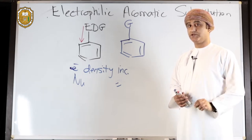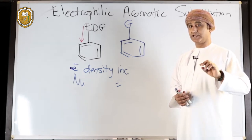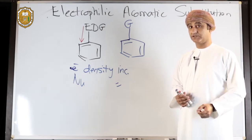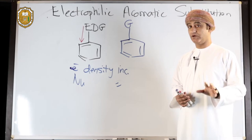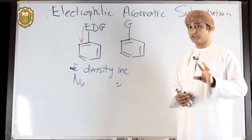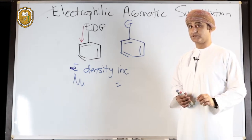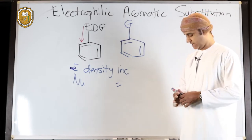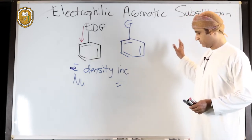Some groups donate electrons by inductive effect, and others can donate electrons by resonance. We will see examples of those two types of electronic effects by which groups donate electrons.